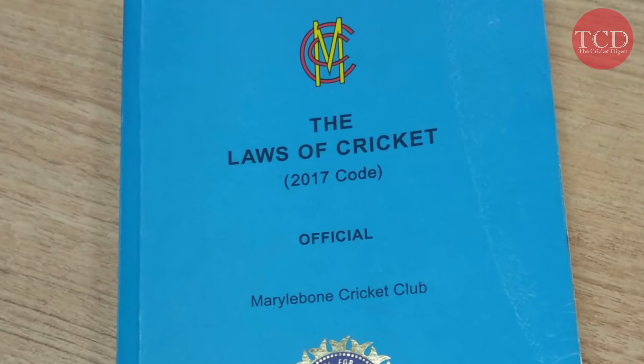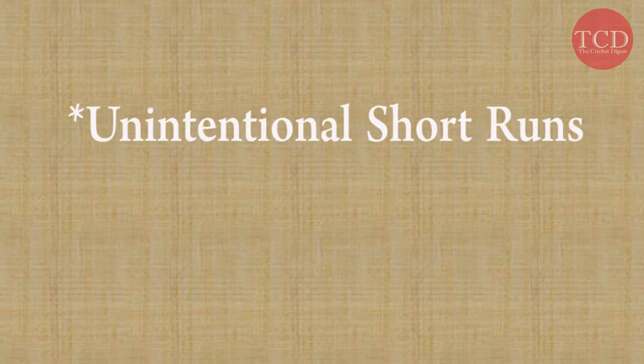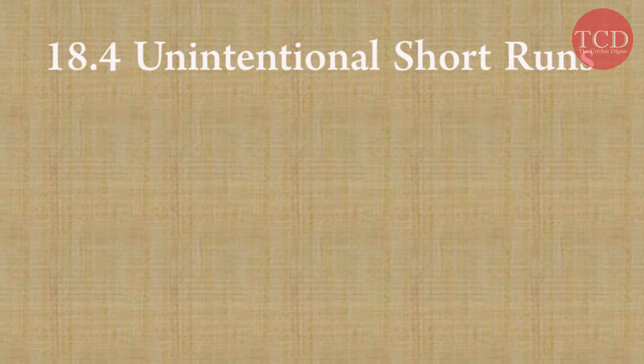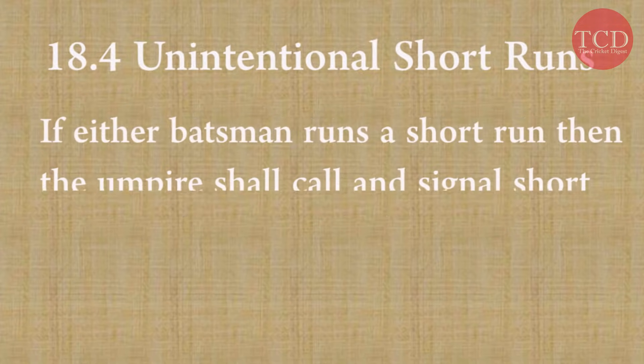There are two categories in this: unintentional and deliberate. Let's take a look at unintentional short running first. If a batsman runs short, then the umpire shall call and signal short run as soon as the ball becomes dead, and that run shall not be scored.